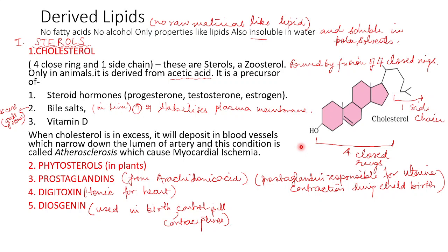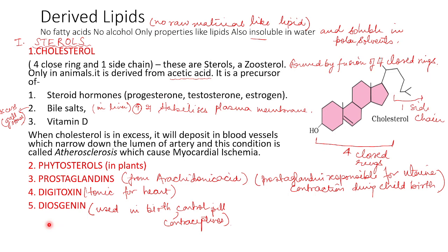When cholesterol is in excess, it deposits in blood vessel walls and causes atherosclerosis — a condition in which the lumen of the artery narrows, leading to myocardial ischemia. Other types of derived lipids include phytosterols (in plants), prostaglandins, digitoxin, and diosgenin. These are all examples of derived lipids.